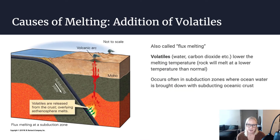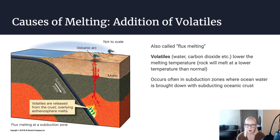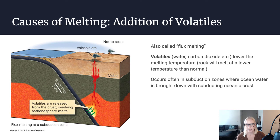The next type of melting is when you've added volatiles to the system — we also call this flux melting in geology. This is when you're adding things like water and carbon dioxide to the rock, which lowers the melting temperature, allowing the rock to melt at lower temperatures than it typically would. This is super common in subduction zones — places where oceanic crust is subducting beneath continental crust. Ocean water is incorporated into sediments on the seafloor, those sediments are subducted down into the crust with a high water content, and that addition of volatiles allows the rock to melt at a lower temperature than it typically would.